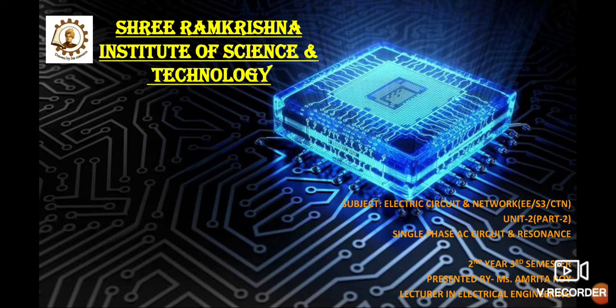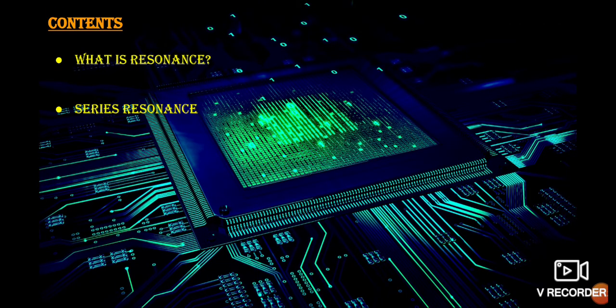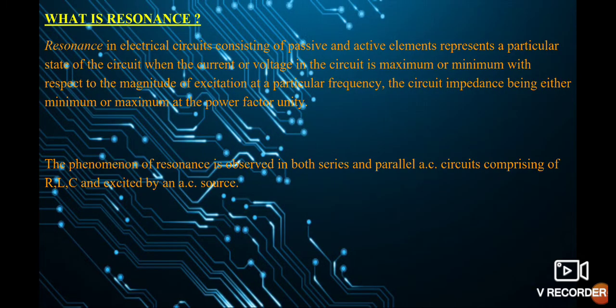Hello students, myself Amrita Roy. Today we are going to discuss about the single phase AC circuit and resonance part 2. We will see what is resonance and series resonance. Resonance in electrical circuits consists of passive and active elements that represents a particular state of the circuit when the current or voltage is maximum or minimum with respect to the magnitude of excitation at a particular frequency, the circuit impedance being either minimum or maximum at unity power factor. The phenomenon of resonance is basically observed in both series and parallel AC circuits comprising of RLC and excited by an AC source.